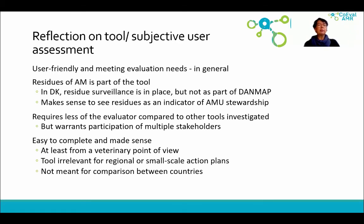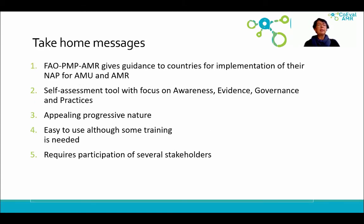The tool is not suitable for regional or small-scale action plans, and it is not meant for comparison between countries. The take-home messages are: the FAO PMP AMR tool gives guidance to countries for implementation of their national action plans for antimicrobial use and resistance. It is a self-assessment tool with focus on awareness, evidence, governance, and practices. It is appealing in its progressive nature and easy to use, although some training is needed, and it requires participation of several stakeholders.